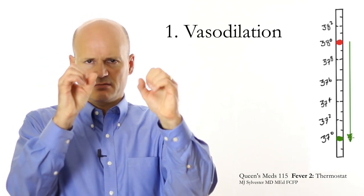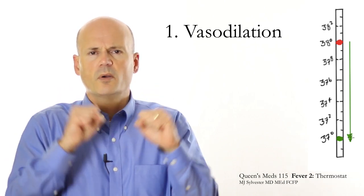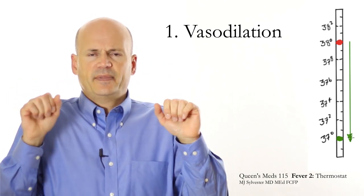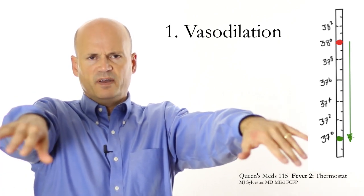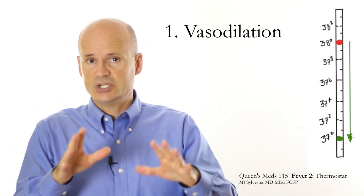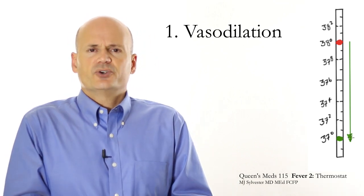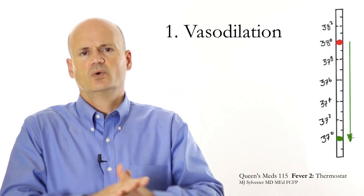Number one is vasodilation, so those blood vessels that were constricted and shunted the blood into the core of your body to keep it warm now open up and let that warm blood flow to the periphery, where it can cool off and cool off the temperature of your body. So vasodilation, or sometimes vasodilatation, is one way that your autonomic nervous system, controlled by your hypothalamus, gets your body to cool off.